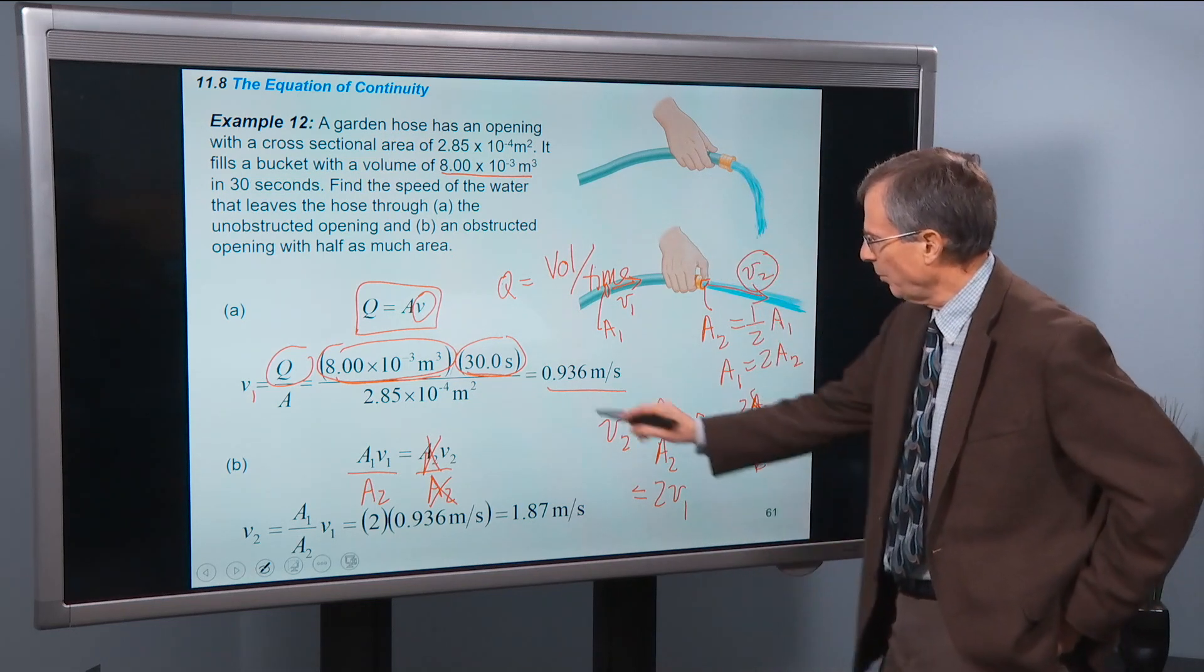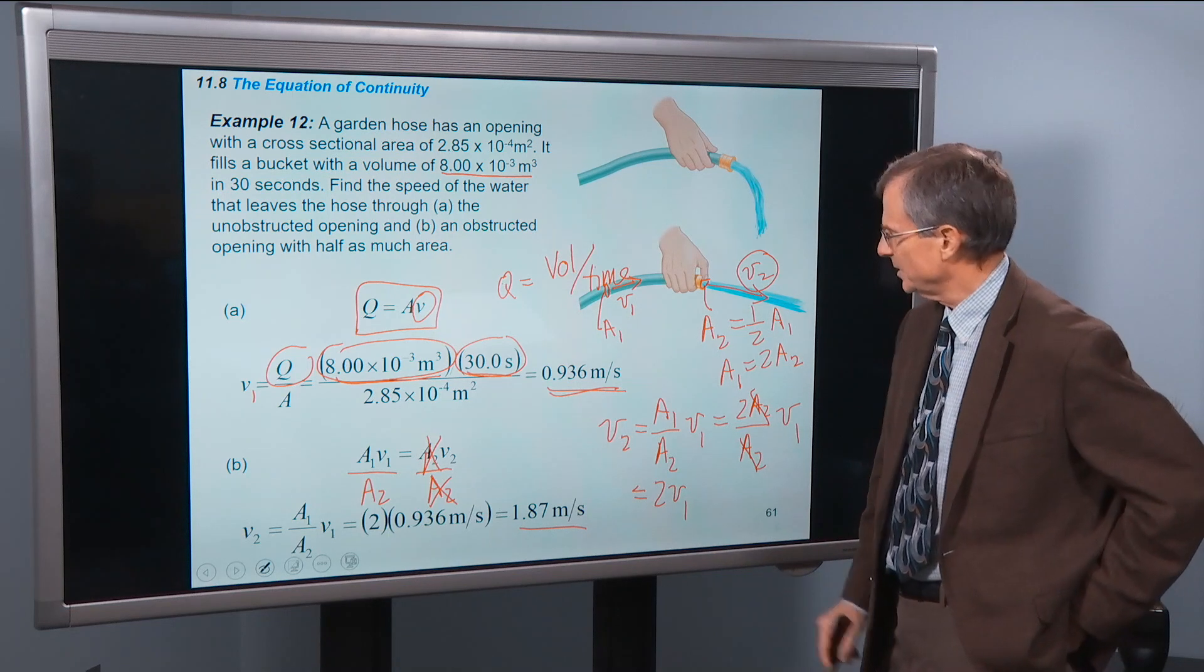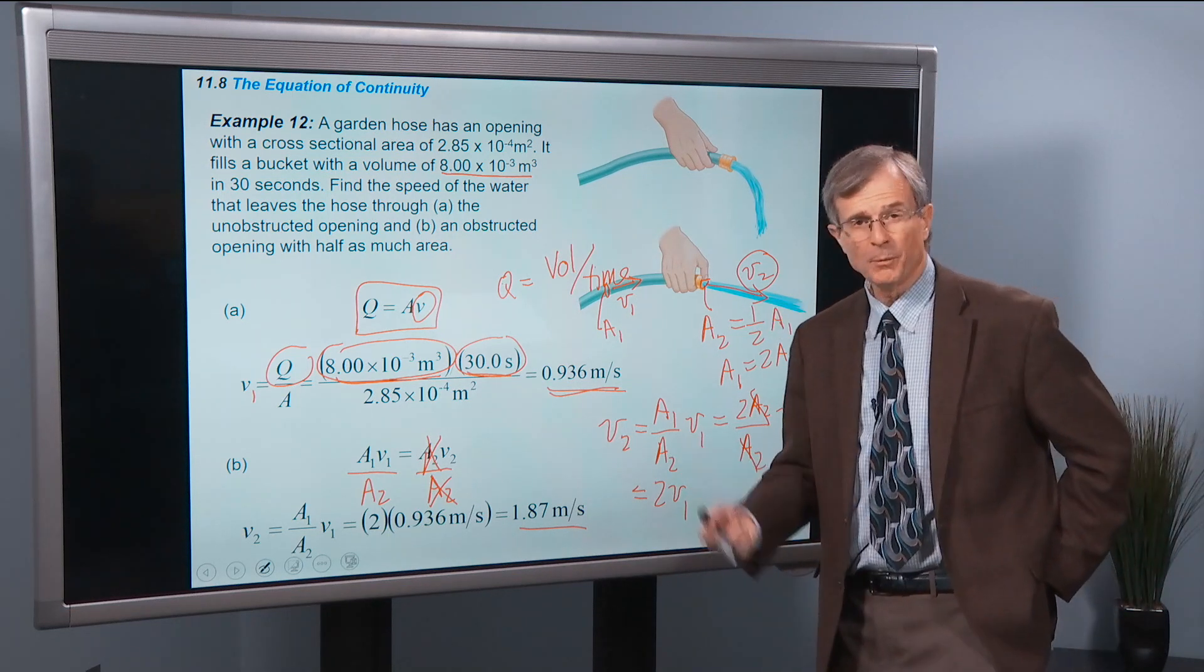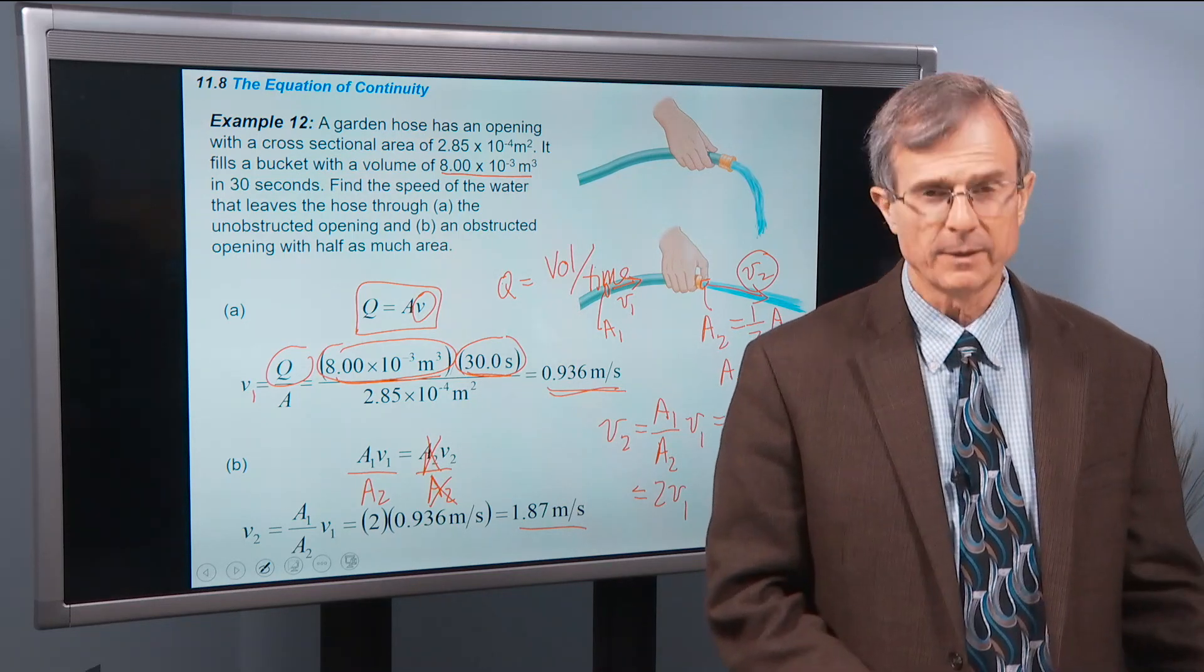And a2 is one half a1, that means that a1 is twice a2. So that's twice a2 over a2 times v1. But lo and behold, the a2's cancel, and we just get twice v1. So whatever v1 was, we just have to multiply it by 2 to get the velocity out here. So you can double the velocity if you pinch off half of the end of the opening.